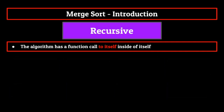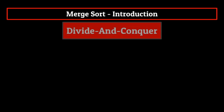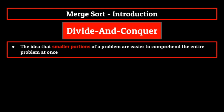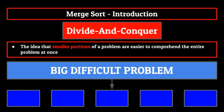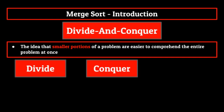We understand that this can be confusing, and having a good understanding of recursion as a whole makes this a little bit easier to comprehend. So if you're interested in that, there's a link in the description and a card in the top right corner which will lead you to that portion of our introduction to programming series where we talk about recursion. Finally, divide and conquer. The idea of a divide and conquer algorithm is based on the fact that smaller portions of a problem are easier to comprehend than the entire problem at once. Divide and conquer algorithms are split into three steps: divide, conquer, and combine.